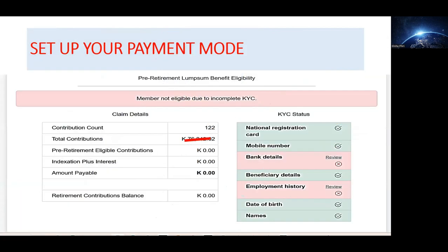When you do that, you will be faced by this window. Move on to the colorful segment — whether it's national registration card, mobile number, date of birth, as well as the names. These are actually confirmed when you are signing up for NAPSA.